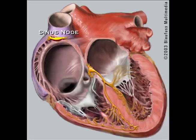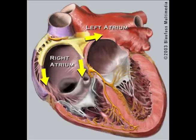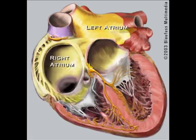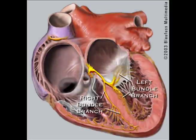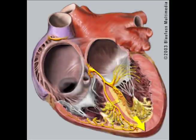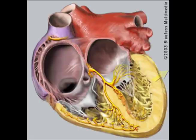As you can see, the electricity in sinus rhythm originates from the sinus node up here on the top of the atria. The electricity then passes through the two top chambers of the heart — the atria — down to the AV node, which is the normal bridge between the top and the bottom chambers of the heart, and then goes down to the ventricle.